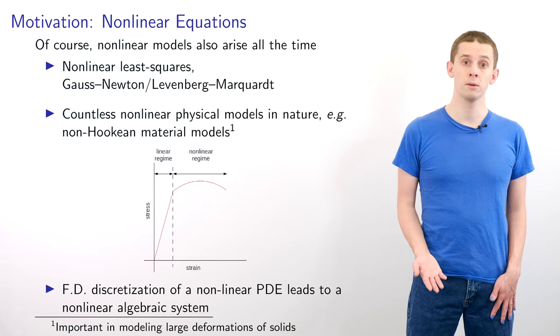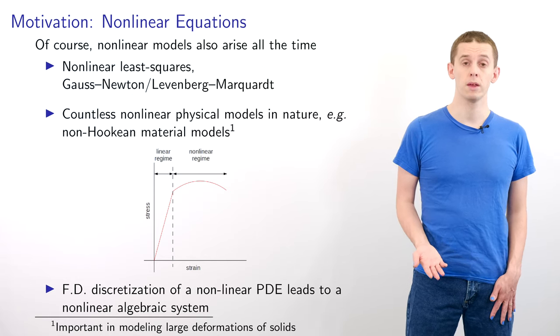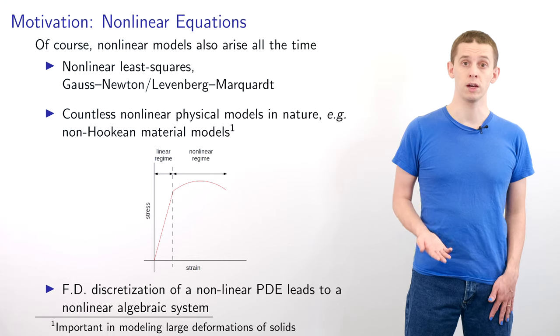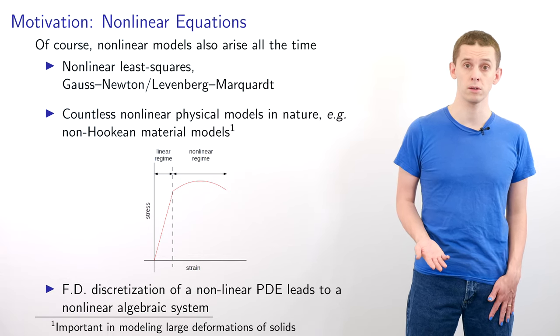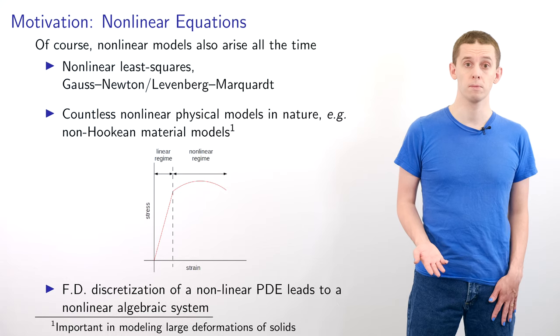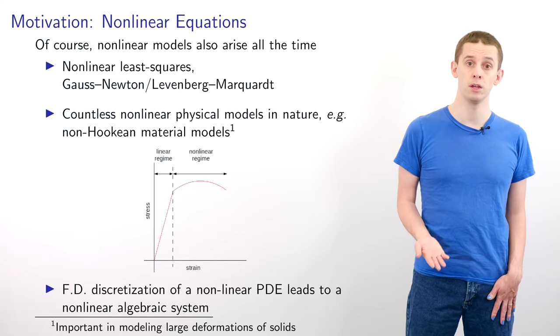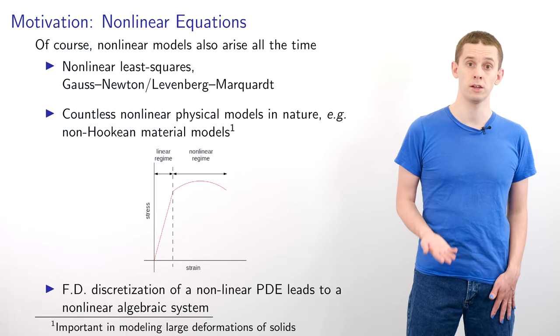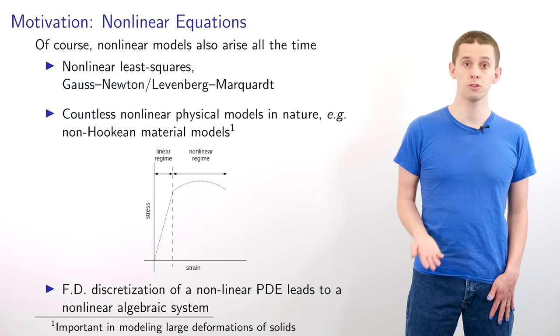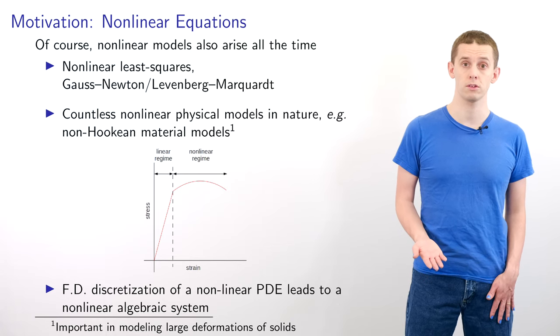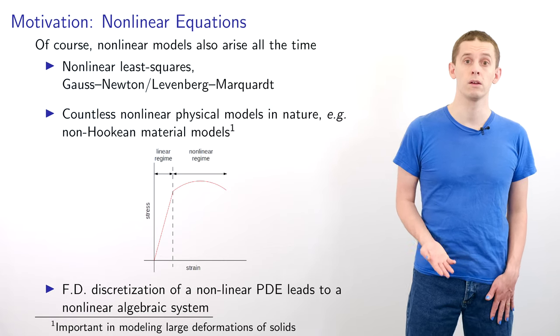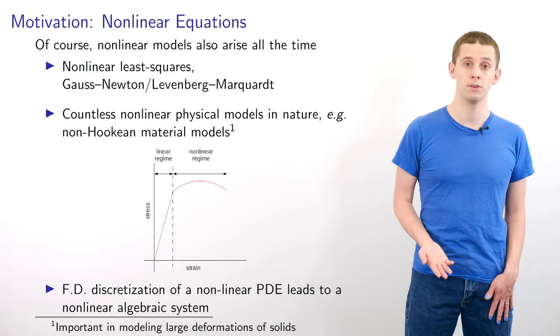Of course non-linear models arise all the time as well and we already looked briefly at this when we examined non-linear least squares and we looked at the Gauss-Newton and Levenberg-Marquardt algorithms to solve these systems. And there are countless numbers of non-linear physical models that arise. A good example of this is in materials modeling. Suppose we take a material and extend it by an amount x, then Hooke's law tells us that over a certain range of x the force generated by that material will be linearly proportional to x. However, if we extend our material further then often that linear relationship will break down and we will have a non-linear response.